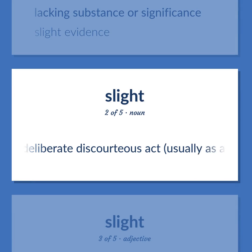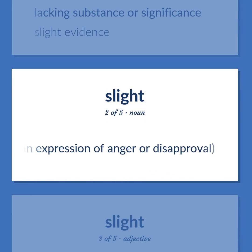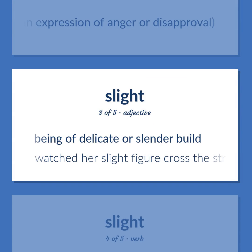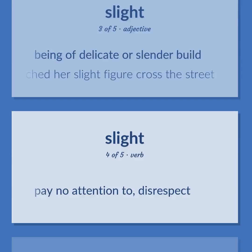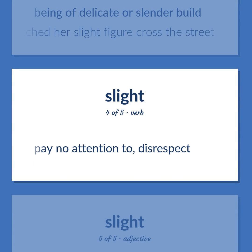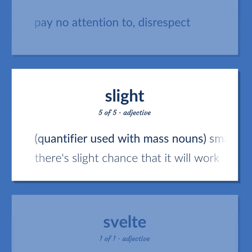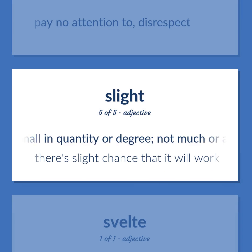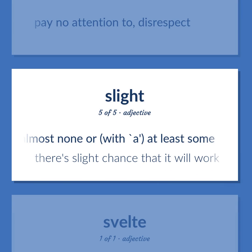Slight. Definition: A deliberate discourteous act, usually as an expression of anger or disapproval. Definition: Being of delicate or slender build. Example: Watched her slight figure cross the street. Definition: Pay no attention to; disrespect. Definition: Small in quantity or degree — not much, or almost none, or with 'a', at least some. Example: Their slight chance that it will work.